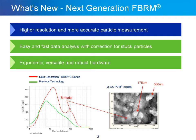For years, our customers have asked us to improve the accuracy of the cord length distribution, to remove surface characteristics and surface roughness measurements that show up within the cord length distribution. And now, with the Next Generation FBRM, we've actually done it.